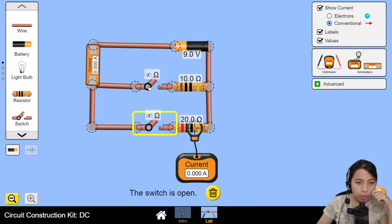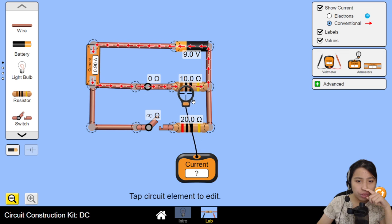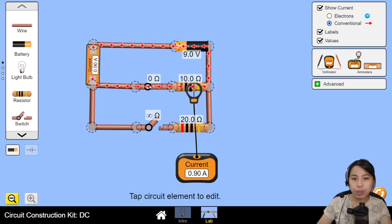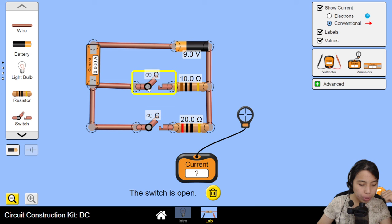The other one we did was we closed the first switch. So, if this one is 0.9. It should also be 0.9. Because look, current is just flowing through that same loop. What if we close both switches?